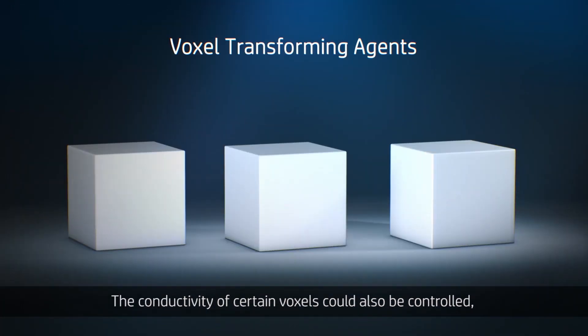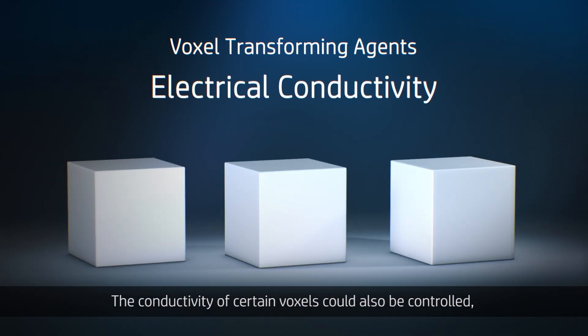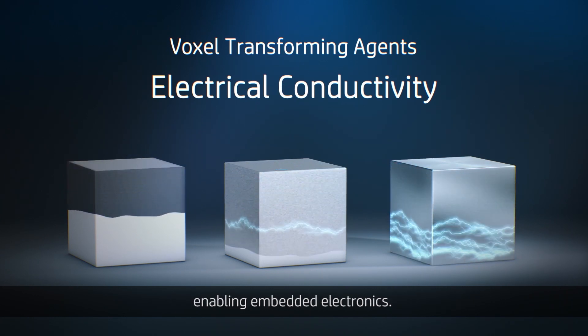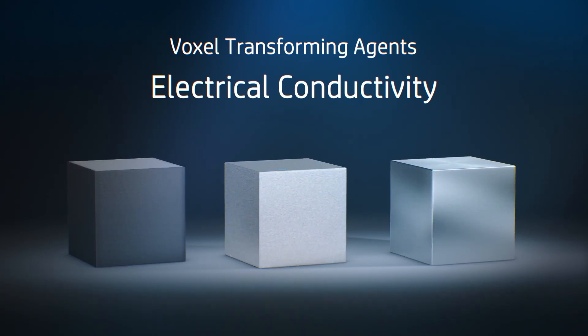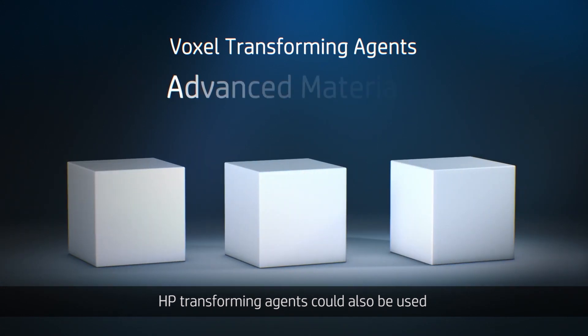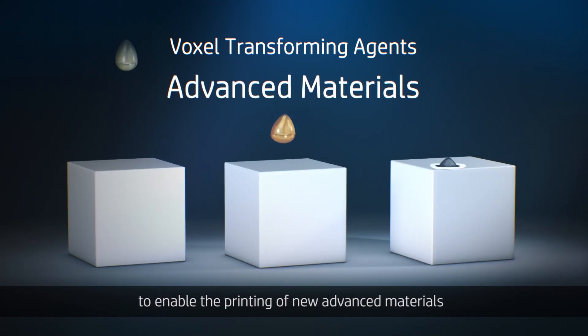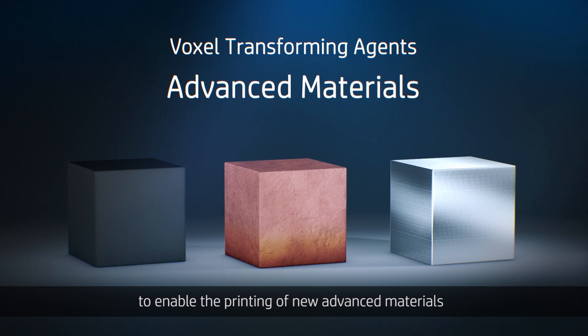The conductivity of certain voxels could also be controlled, enabling embedded electronics. HP transforming agents could also be used to enable the printing of new advanced materials, or enable emulating different materials at each voxel.